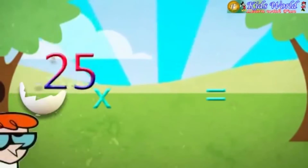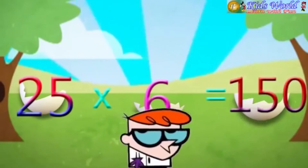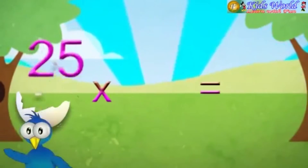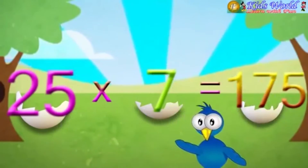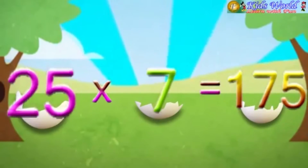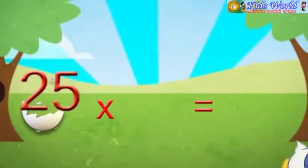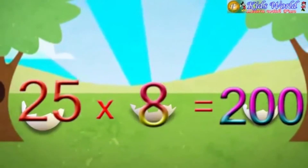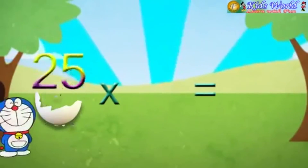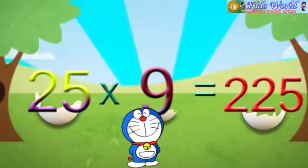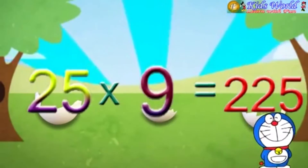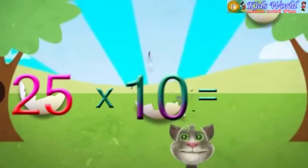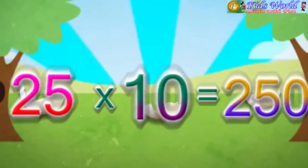25 into 6 is equal to 150. 25 into 7 is equal to 175. 25 into 8 is equal to 200. 25 into 9 is equal to 225. 25 into 10 is equal to 250.